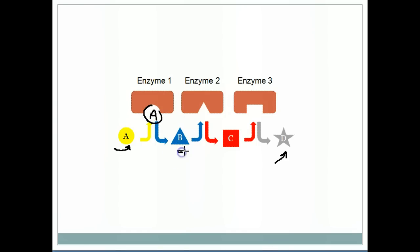Now this B, being a product of enzyme 1, is also a substrate, a very specific substrate for enzyme 2. Now when it interacts with enzyme 2, it's converted to a product C, but this product C, likewise, is a substrate for enzyme 3.